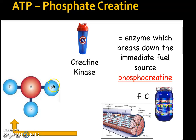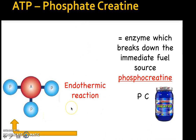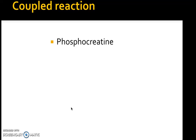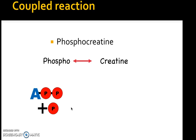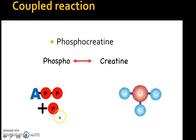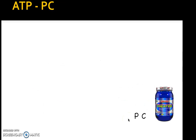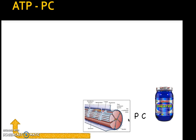The released phosphate is resynthesized back with adenosine diphosphate — this is known as the endothermic reaction, the replacing of the phosphate. Another term used with this system is a coupled reaction. The reason we say that is because two things are taking place: the phospho and the creatine separating is one reaction, and that is coupled to another reaction — the replenishment or resynthesis of the phosphate back to adenosine diphosphate — with the end result being adenosine triphosphate.